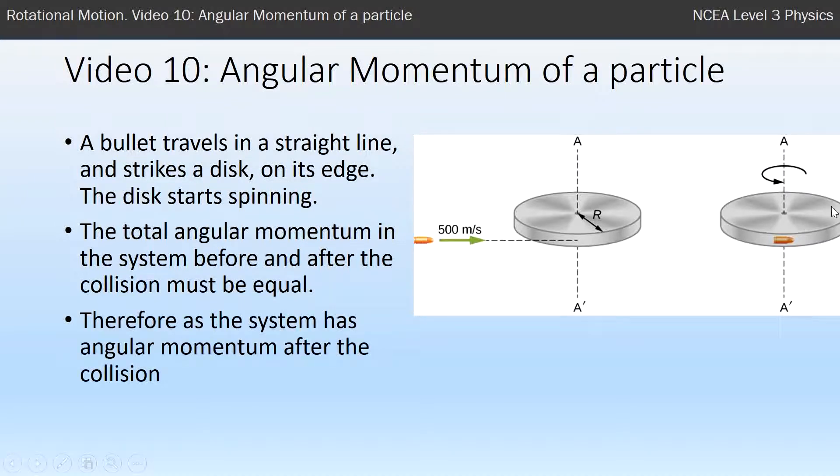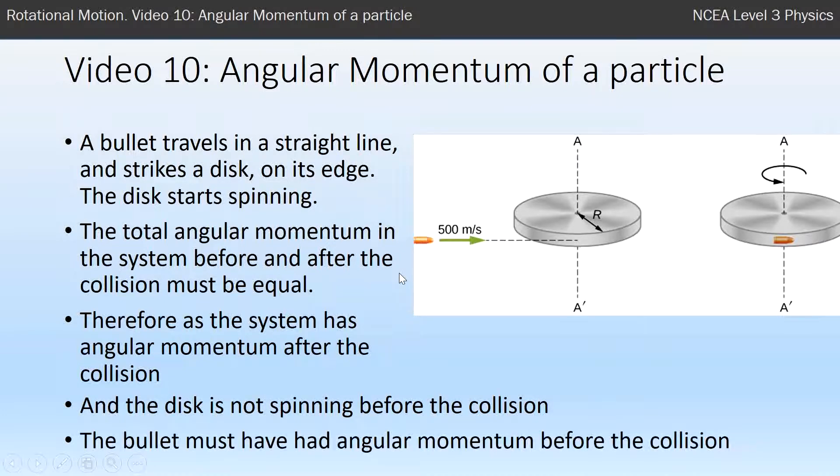On the right, the whole system's spinning. So as the system has angular momentum after the collision, it must have had angular momentum before the collision. But the disc is not spinning before the collision, so where's the angular momentum? The bullet has the angular momentum, even though it's traveling in a straight line.